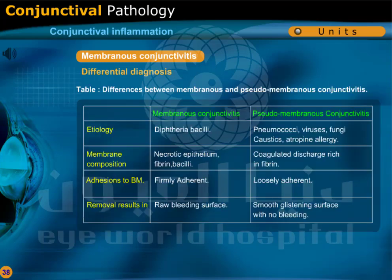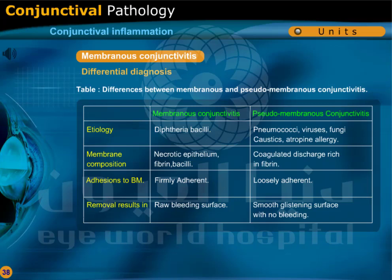Differences between membranous and pseudomembranous conjunctivitis: membranous conjunctivitis is caused by diphtheria bacilli. The membrane is composed of necrotic epithelium, fibrin, and bacilli. It is firmly adherent to the basement membrane, and its removal results in a raw bleeding surface.